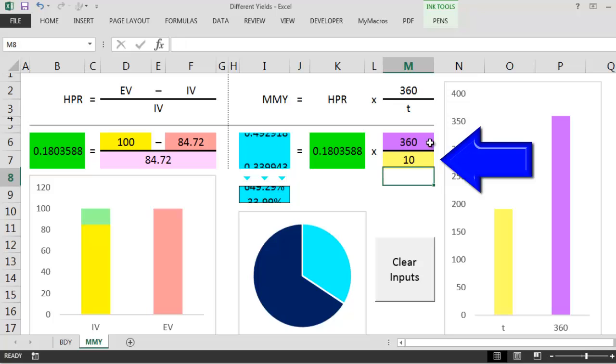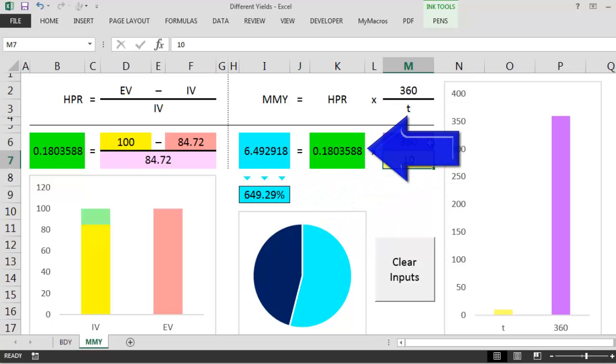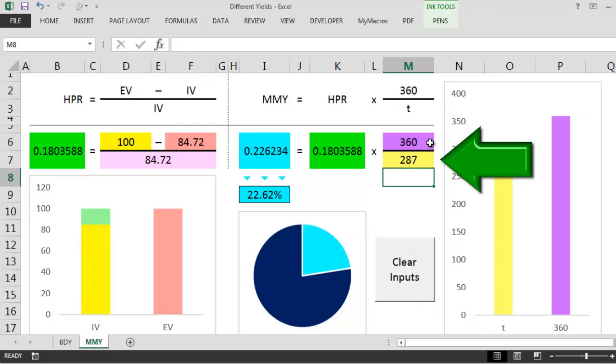Notice, if we change the time to maturity to just 10 days, we get a whopping 649% return, though we do still have the same holding period return. And if we change the time to maturity to 287 days, again we get the same holding period return, but the money market yield drops to a measly 22.62%, and that's hardly worth getting out of bed for.